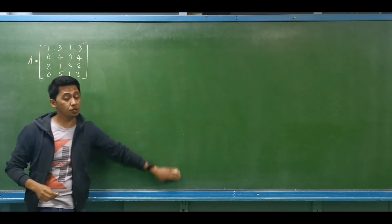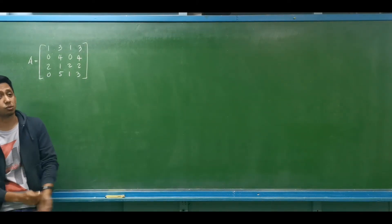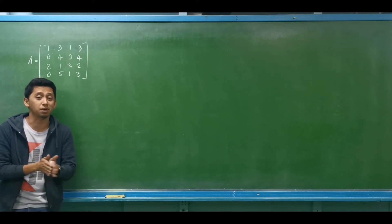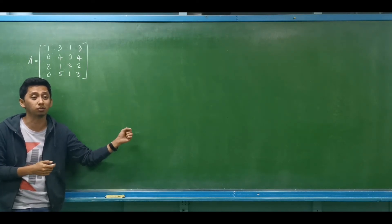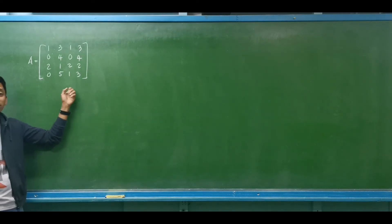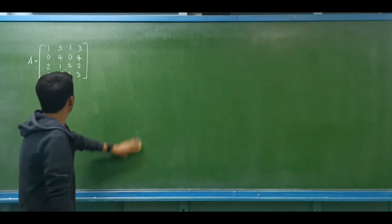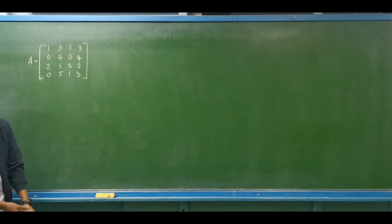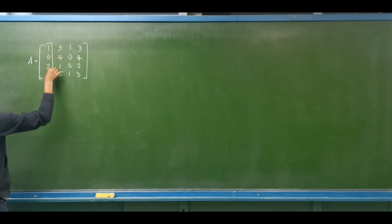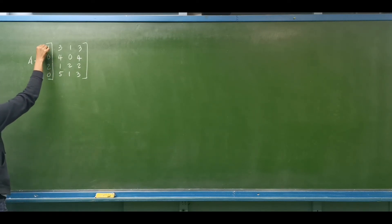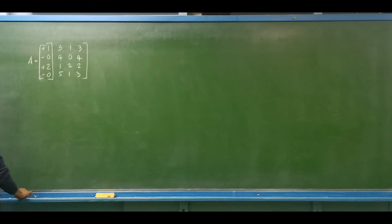Let's set up another example — this time a 4 by 4 matrix. We may combine our procedures: the Laplace expansion and the basket-weave method, since our sub-matrices will be 3 by 3. First, choose a row or a column. I'll be using the first column. Don't forget the alternating signs: positive, negative, positive, then negative.